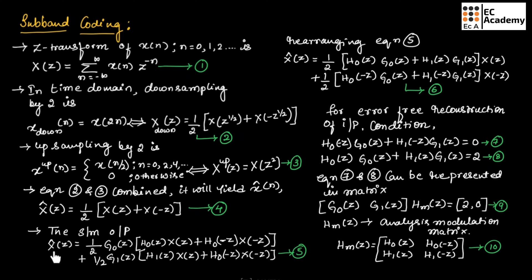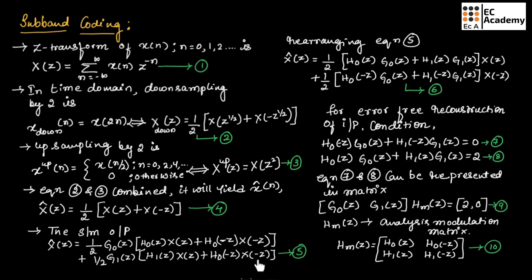The system output can be written as: X̂(z) = (1/2)·G0(z)[H0(z)·X(z) + H0(−z)·X(−z)] + (1/2)·G1(z)[H1(z)·X(z) + H1(−z)·X(−z)]. Rearranging this equation gives: X̂(z) = (1/2)[H0(z)G0(z) + H1(z)G1(z)]·X(z) + (1/2)[H0(−z)G0(z) + H1(−z)G1(z)]·X(−z).